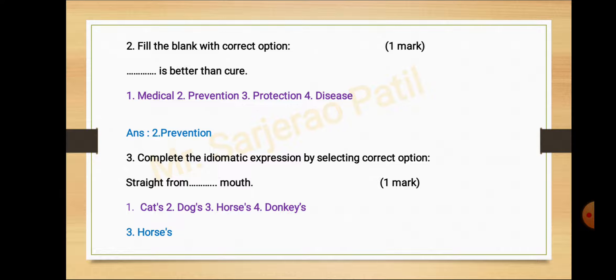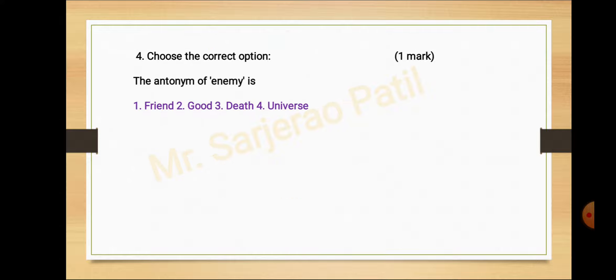Let's go to the next activity, activity number four. Choose the correct option. The antonym of enemy is: option number one friend, second good, third death, fourth universe. Answer is friend.